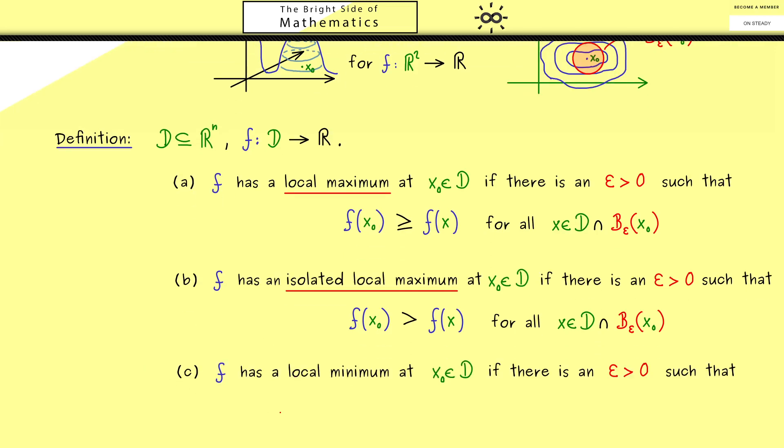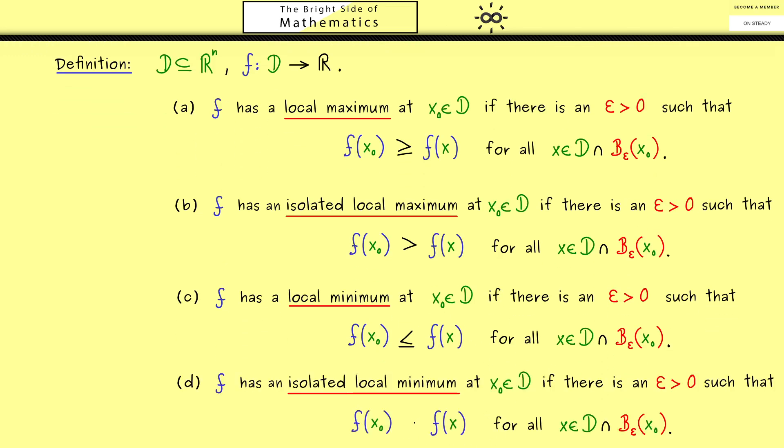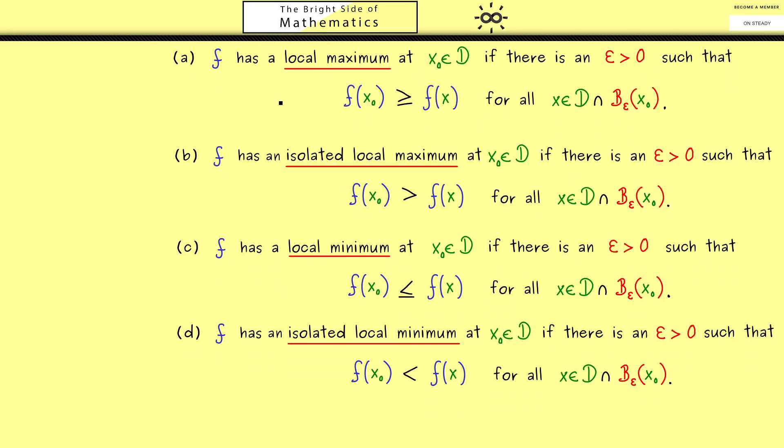And now maybe not so surprising, we can formulate exactly the same things now for local minima. In fact, the only thing that changes here is the direction of the inequality. Now f(x_0) should be smaller than every other value in the neighborhood. And of course, exactly the same we can formulate for the isolated local minimum, which means there we have now the strict inequality as before.